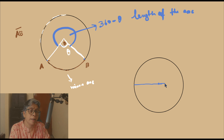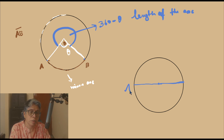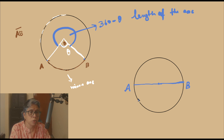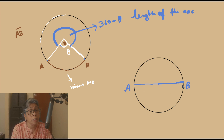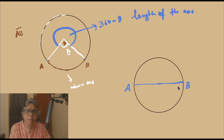So if this is the diameter — if the same chord AB is the longest chord of the circle, or the diameter — then you see that the two arcs, the major and the minor arc, are both equal in length. What would be the length?